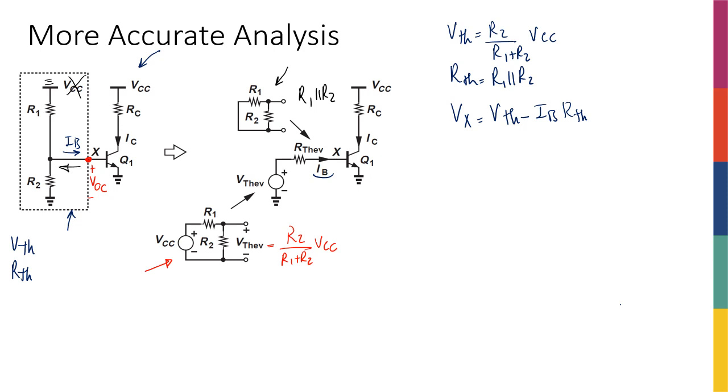And then I can say that IB is going to be Is exponential of, and then instead of Vbe, I'm going to have the expression for Vx. So it is V-Thevenin minus IB times R-Thevenin divided by Vt.